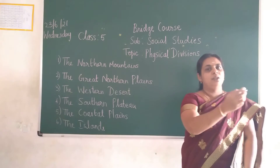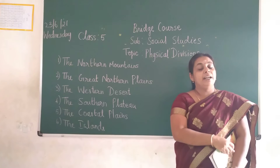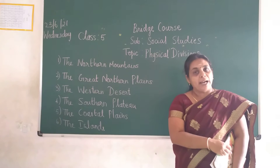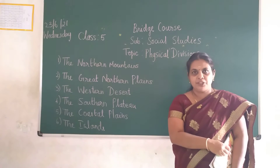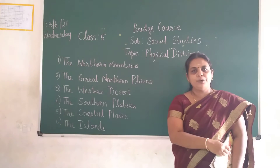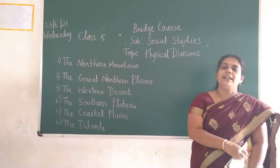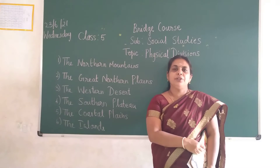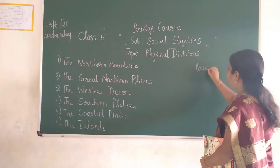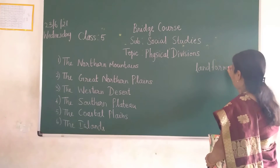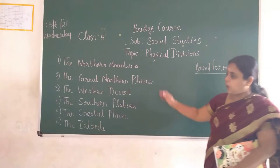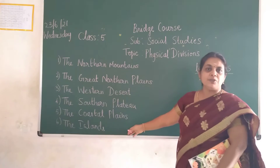So if you observe, there are so many landforms in India — like deserts, mountains, plains, islands, and more. You could have seen pictures of these in your textbook or in the news. India is a land of diversity and has got different landforms. These different landforms have been divided into 6 divisions.